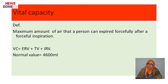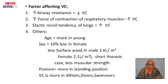Now, an important topic: vital capacity in detail. The maximum amount of air that a person can expire forcefully after a forceful inspiration — about 4600 mL. Factors that affect vital capacity: increased airway resistance decreases vital capacity; increased force of contraction of respiratory muscles increases vital capacity; elastic recoil of the lung also increases vital capacity. Regarding age, it is more in younger persons. In females it is 10% less due to less surface area, shorter thoracic cage, and less muscle strength. In terms of posture, it is more in standing position. Vital capacity is more in athletes, drivers, and swimmers.